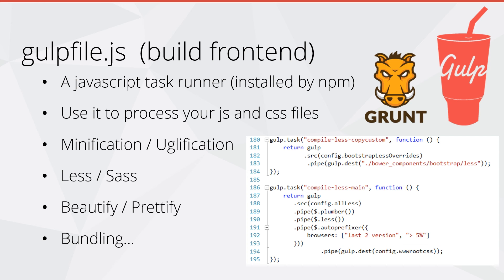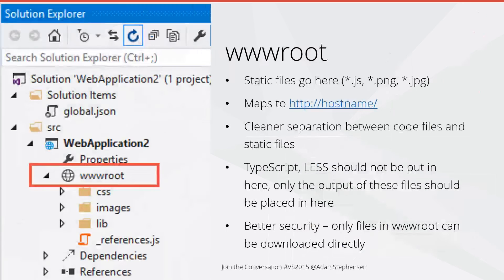To do this, we use a JavaScript task runner like Grunt or Gulp. In ASP.NET 5, we now have the concept of a wwwroot folder. This is where all of our static files go. It gives us a clearer separation of our code files and static files, as well as performance improvements and better security, since only files in the wwwroot folder can be downloaded directly.